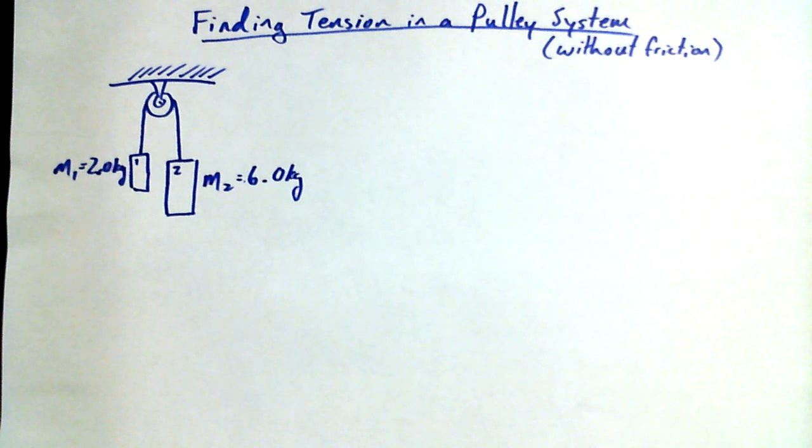We've got a pulley system with two masses hanging off of it, mass one and mass two. Mass one has a mass of two kilograms, mass two has a mass of six kilograms.